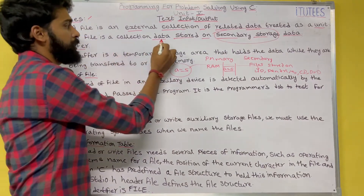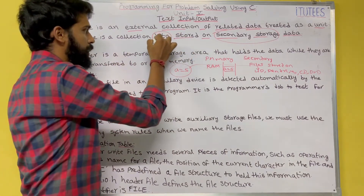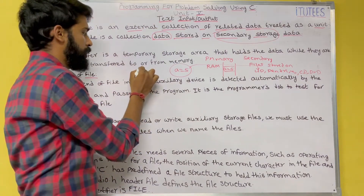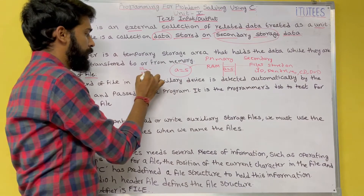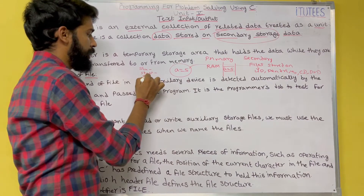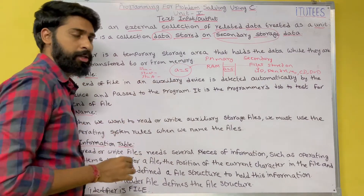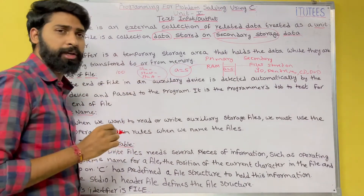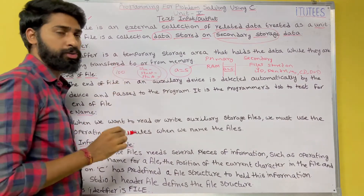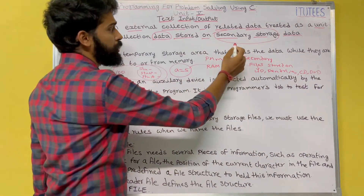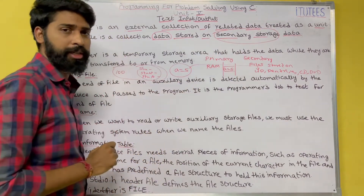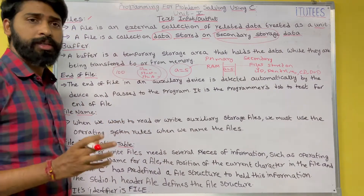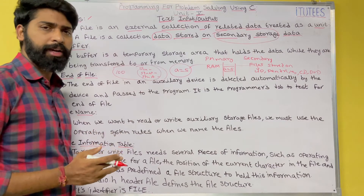A file is a collection of data. For example, there is a student name, student number, and student address — like this we have 100 records. The whole data is stored in a file, which is stored on a secondary storage device. So file is a collection of data stored on a secondary device, meaning the data is stored permanently.